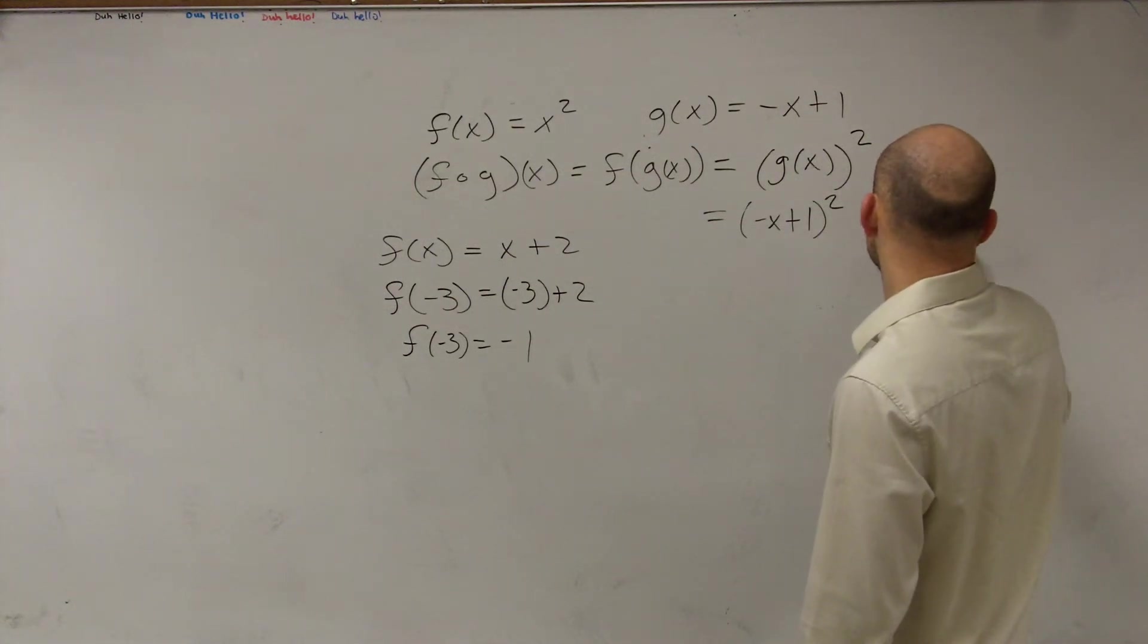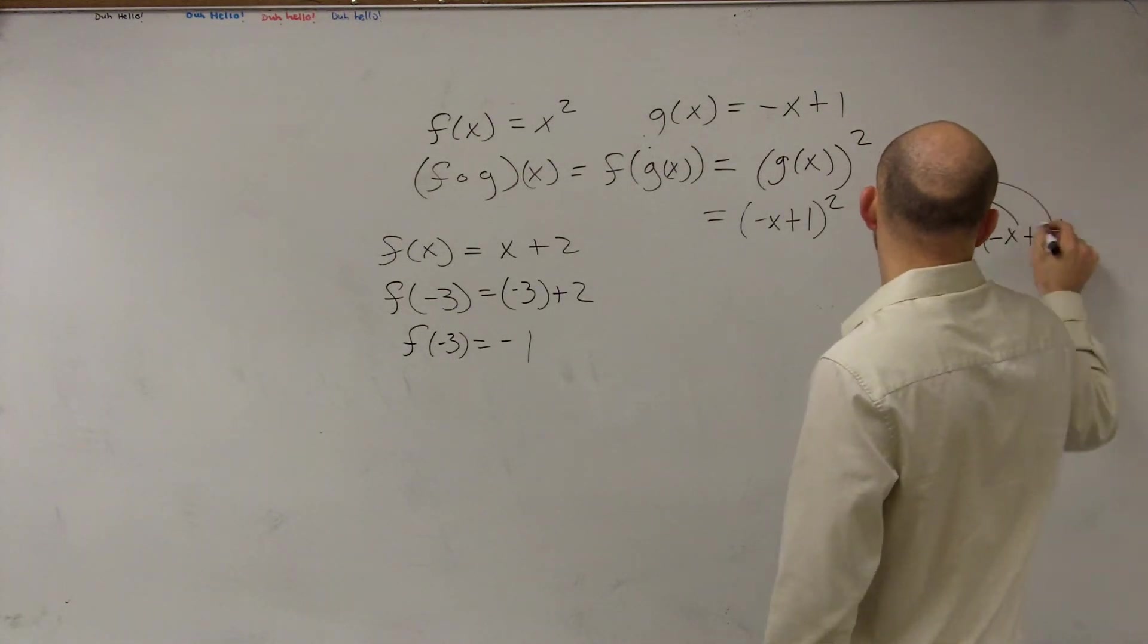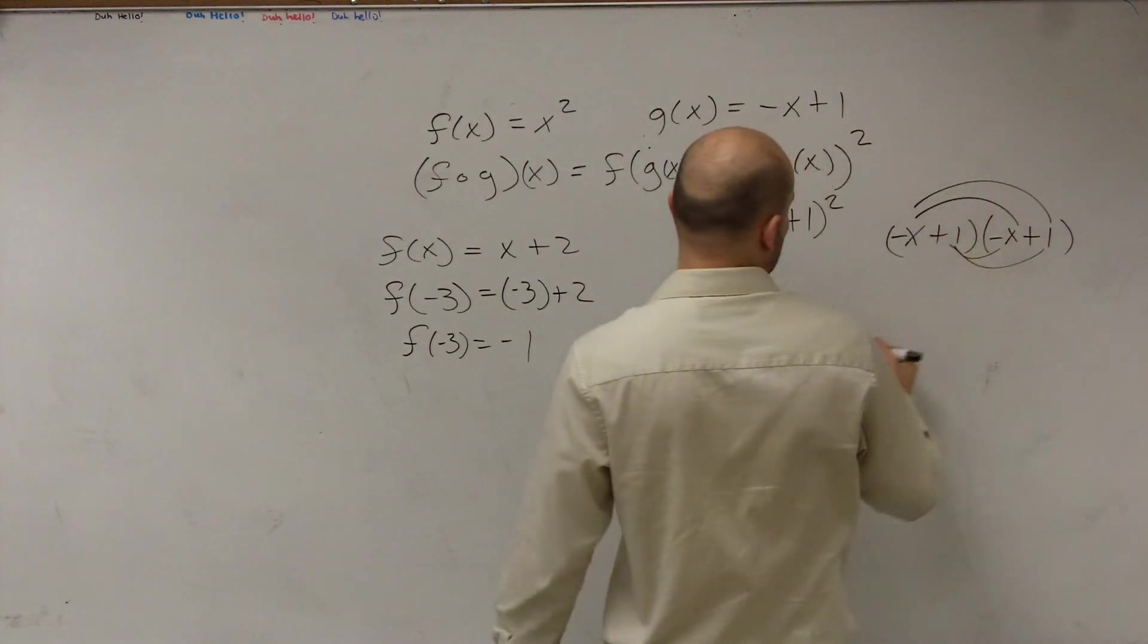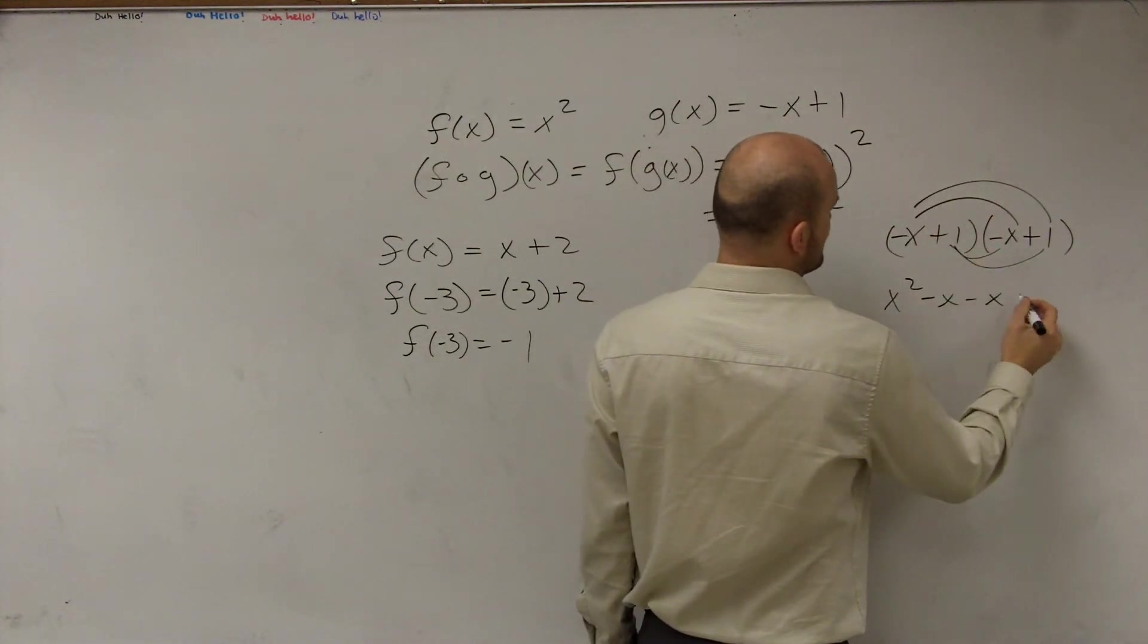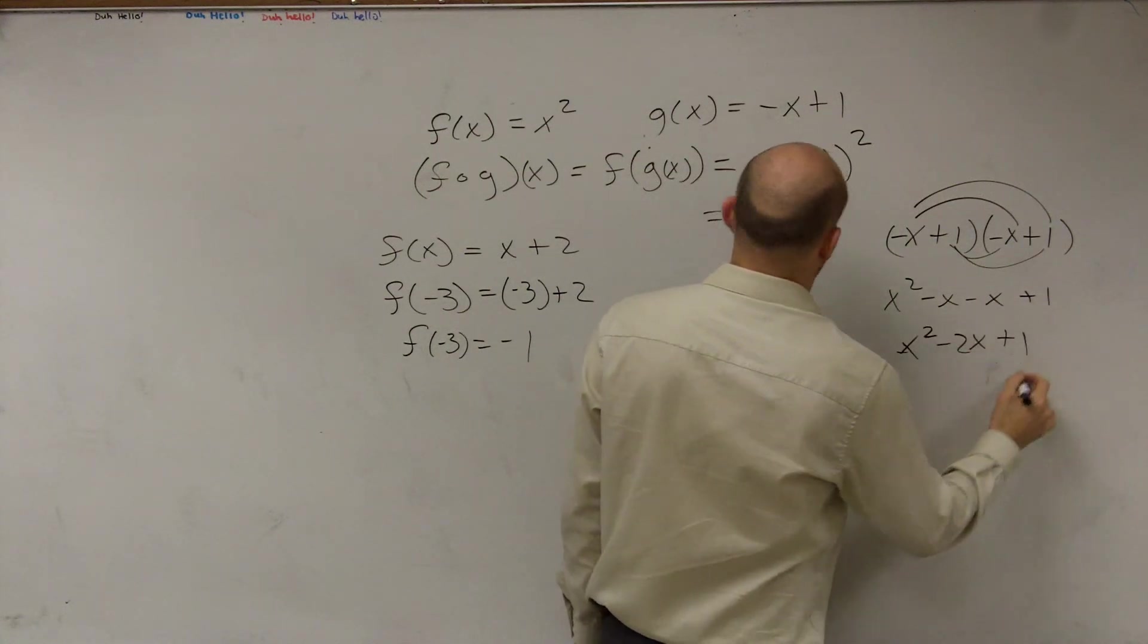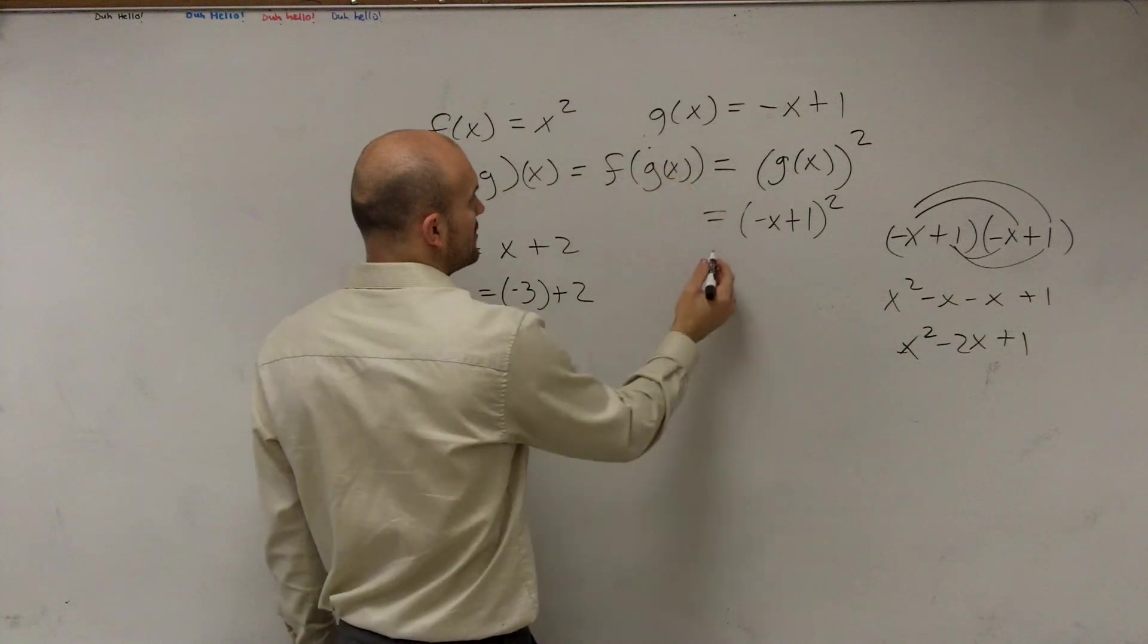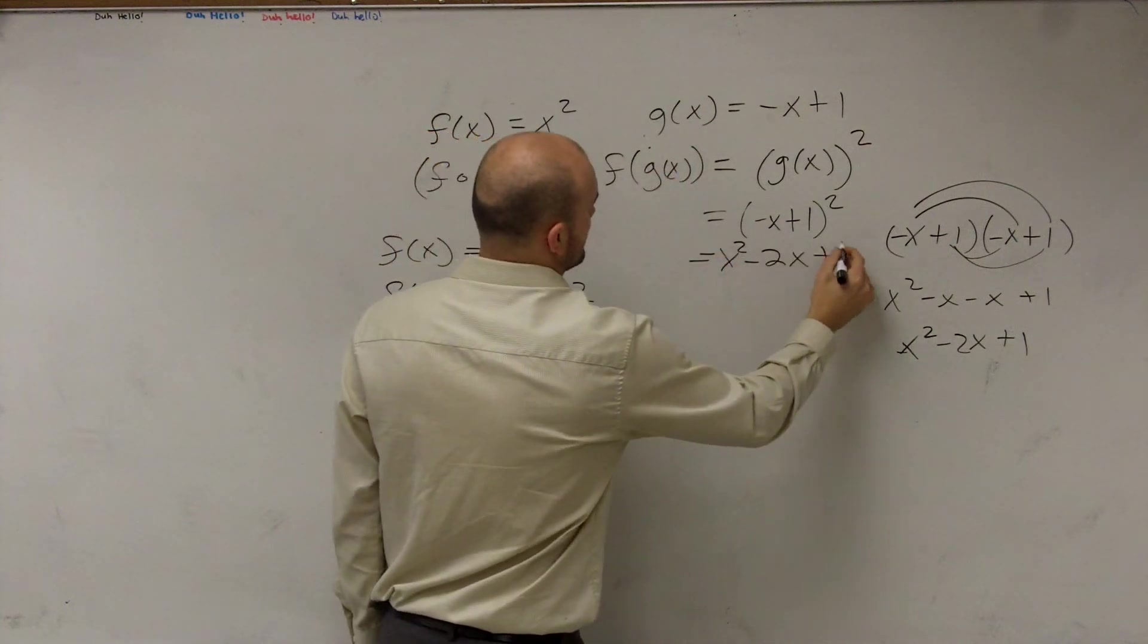And you could use the box method if you wanted to. This is not difference of two squares. So therefore, negative x times negative x is a positive x squared, minus x, minus x, plus 1, x squared, minus 2x, plus 1. So therefore, you could say f of g of x is equal to x squared minus 2x, plus 1.